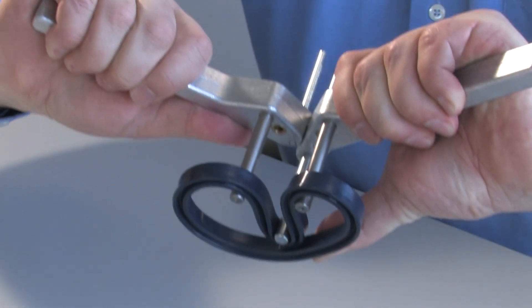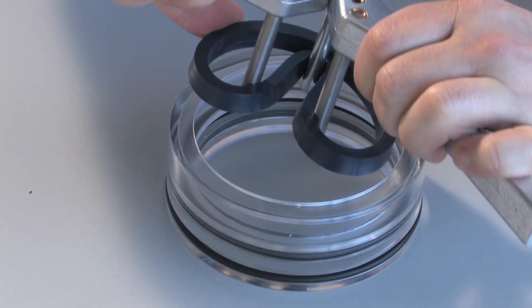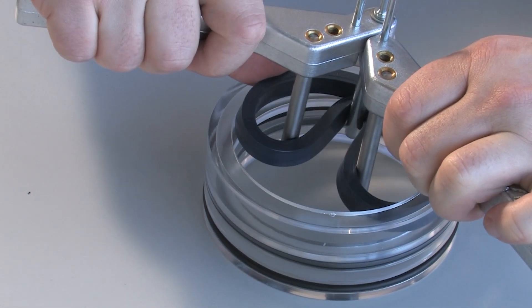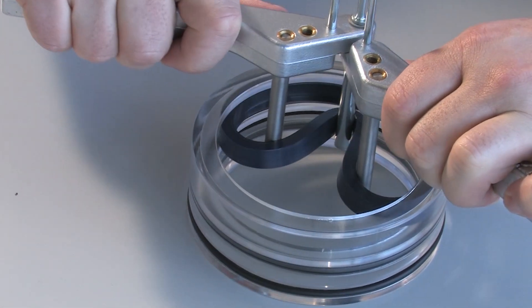Opening the pliers will force the seal into a kidney shape, allowing the seal to be inserted into the housing. Please make sure that the sealing edges are not damaged.